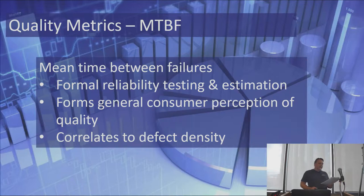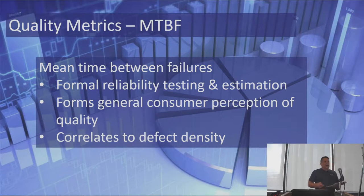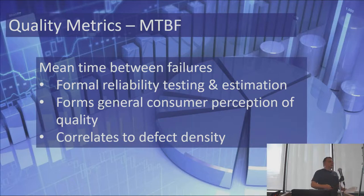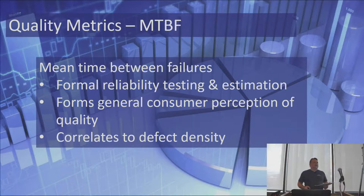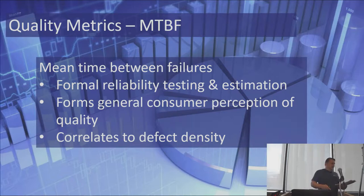Mean time between failure is another quality metric, typically used in formal reliability testing and estimation. It forms the general perception of customer quality — for example, if your car breaks down every two weeks instead of every two years, that affects your estimation of its quality. MTBF also correlates to defect density and can help estimate defect density if you don't know what yours is.